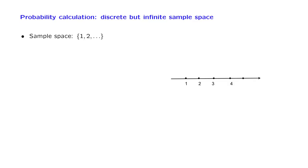The first heads might appear in the first toss, or the second, or the third, and so on. So in this example, any positive integer is possible, and so our sample space is infinite.